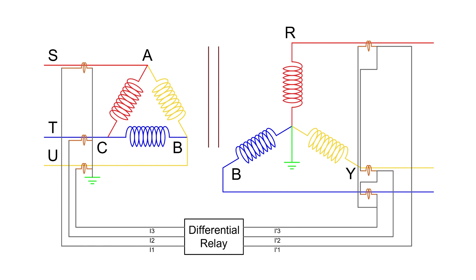Since zero-sequence current cannot flow in a delta winding, the line current, which is IA minus IB, does not contain any zero-sequence component. This means that the CT secondary currents, I1, I2 and I3 on the delta side, will also not have zero-sequence current components. You might wonder why we don't connect these CTs in delta.